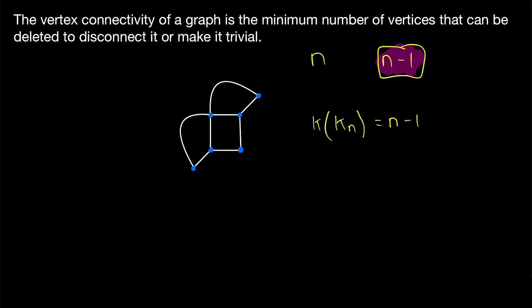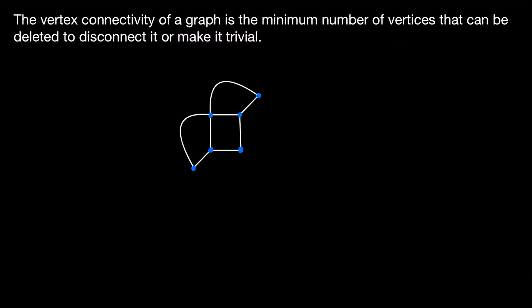Although you can't disconnect a complete graph by deleting any number of vertices, you can make it trivial by deleting all but one vertex. What we want to prove today is that the vertex connectivity of a graph g, denoted κ(G), is less than or equal to the minimum degree of the graph. This is a nice, simple upper bound for the vertex connectivity of any graph.